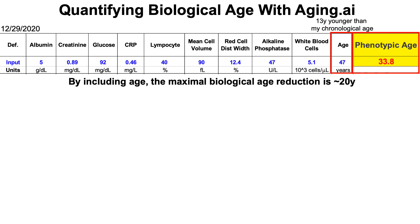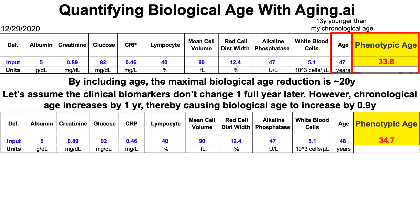There's a limitation to that story. By including chronological age in the calculation, the maximal biological age reduction is up to about 20 years. So with my chronological age of 47, the greatest reduction I could potentially experience would be seeing a phenotypic age of around 27.